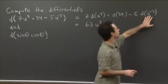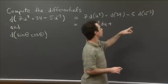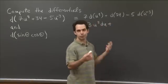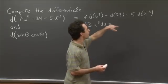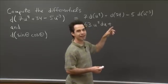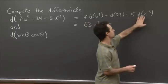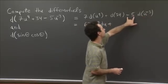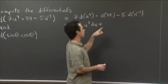Minus 5d of u to the minus third. So again, u to the minus third, that's just a power of u. We apply our usual rule for it. So it's minus 3u to the minus 4 du, right? And so we have, minus 5 times minus 3 is plus 15.